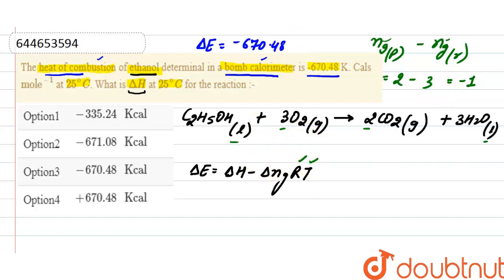Here R is the gas constant. Since the delta E, that is internal energy, is in calories, we will write down the value of the gas constant in calories.